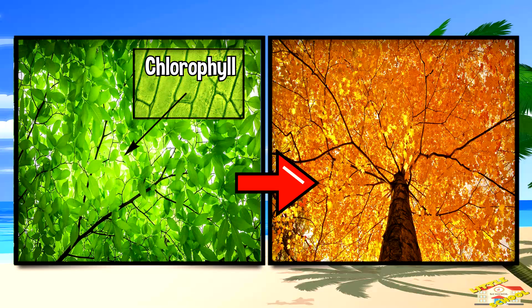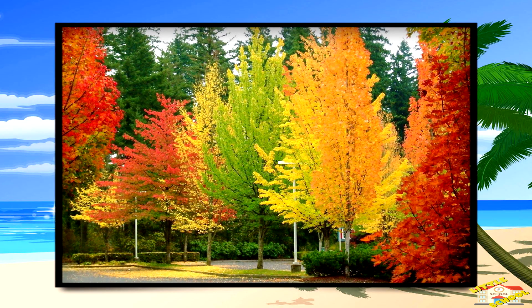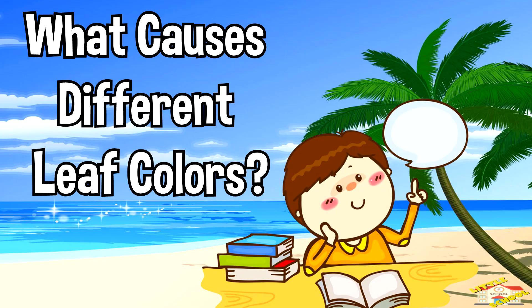The green chlorophyll breaks down, revealing other colors that were already in the leaves but were hidden before. As the green fades, we start to see yellow, orange, red, and even purple colors in the leaves. What causes different leaf colors?